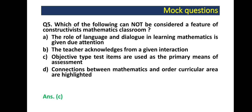Next question is question 5: Which of the following cannot be considered a feature of constructivist mathematics classroom? Option A: role of language and dialogue in learning mathematics is given due attention. Option B: the teacher acknowledges from a given interaction. Option C: objective type test items are used as the primary means of assessment. Option D: connections between mathematics and other curricular areas are highlighted. So here the best option is C: objective type test items are used as the primary means of assessment.